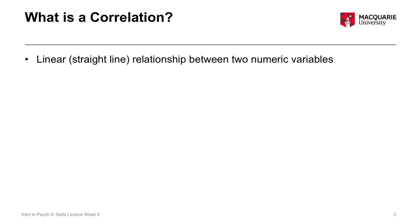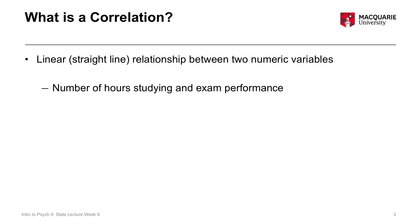A correlation represents a relationship, but specifically a straight line — a linear relationship between two numeric variables. That means you can represent the association using a straight line, which will make more sense when we look at scatter plots. For example, I might want to see if there's a relationship between the number of hours somebody spends studying and their performance on an exam. Both of those are numeric variables — number of hours studying is numeric, and exam performance could be a number between zero and 100.